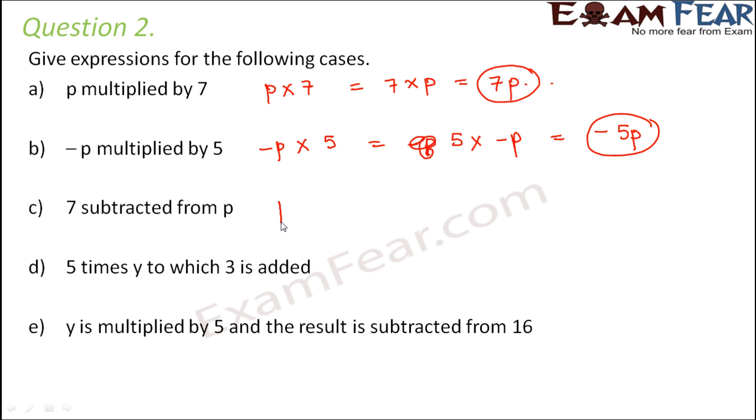7 subtracted from p. So you have something like p minus 7. 5 times y. So 5 times y would be 5y. 5 times y to which 3 is added. So you add 3 to this. So it becomes 5y plus 3.